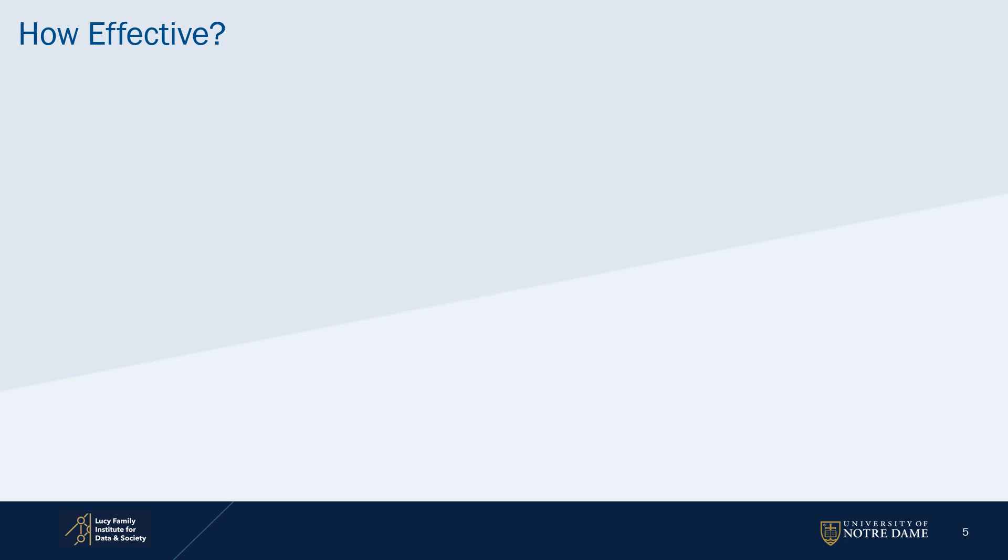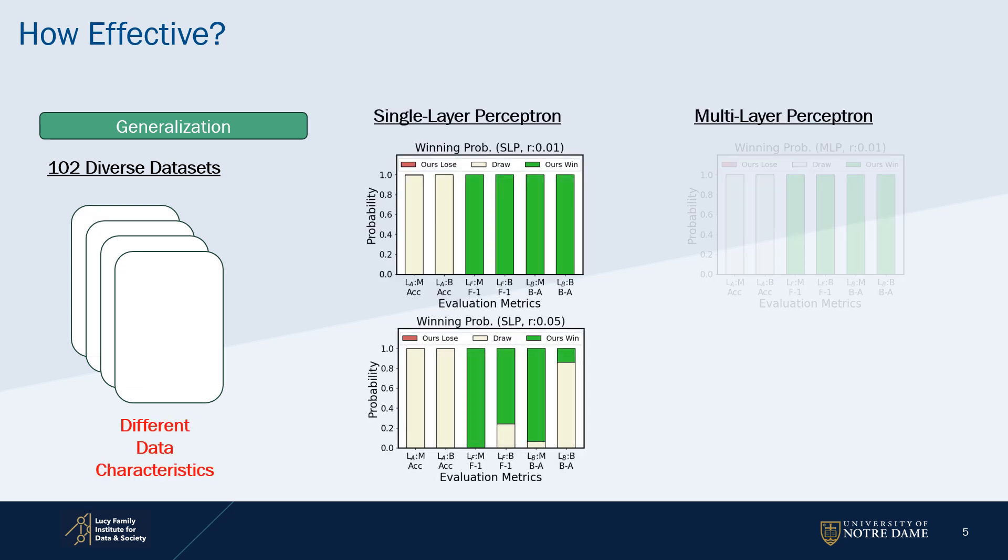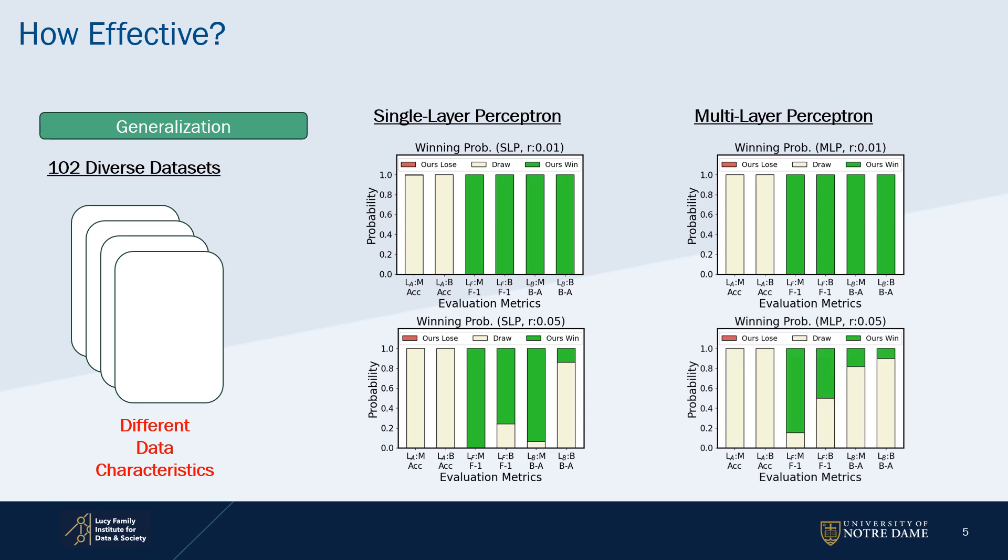How effective is AnyLoss? First, generalization is shown through experiments with over 100 datasets that contain diverse characteristics under single and multi-layer perceptron structures. This implies that AnyLoss can be used for any deep learning architecture as well.